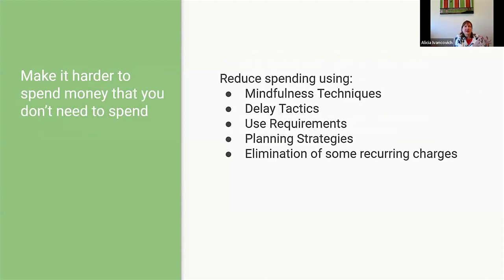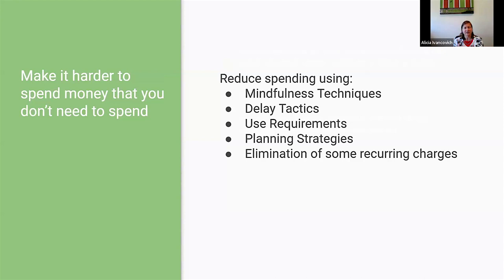Those were ways to make it easier to have money available for expenses. The flip side is how do you make it harder to spend money on stuff you really don't need or that is sabotaging your spending? We're going to talk about different techniques and strategies to reduce spending: mindfulness things, delay tactics, making sure you're actually using what you purchase, planning out what you're purchasing, and eliminating recurring charges that knock off your spending plan.